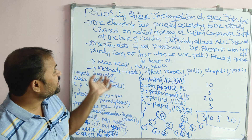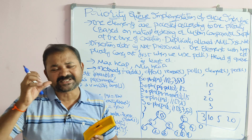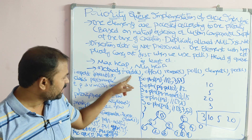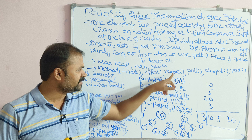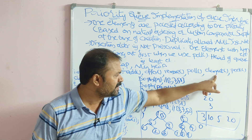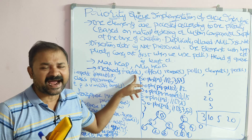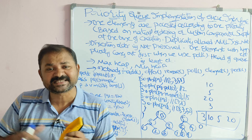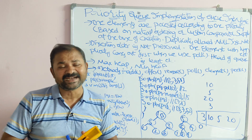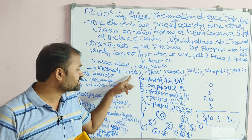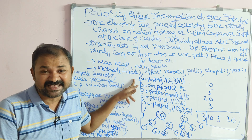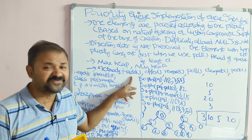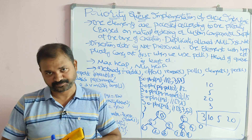The methods of Priority Queue are similar to the methods of Queue interface: add, offer, remove, poll, element, and peek. By using the add method, we can add an element to the Priority Queue. If insertion is successful, it returns true. If the insertion fails — for example, when the queue is full — it throws an exception.